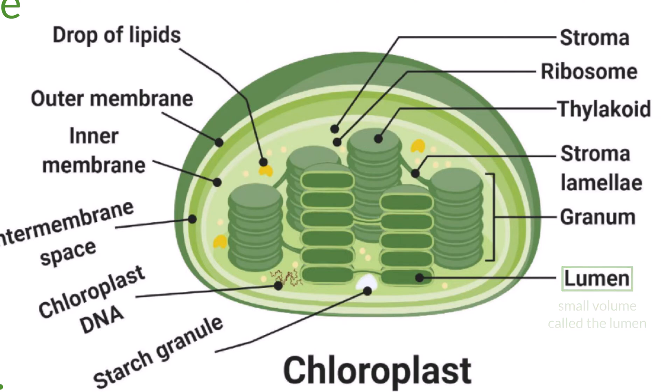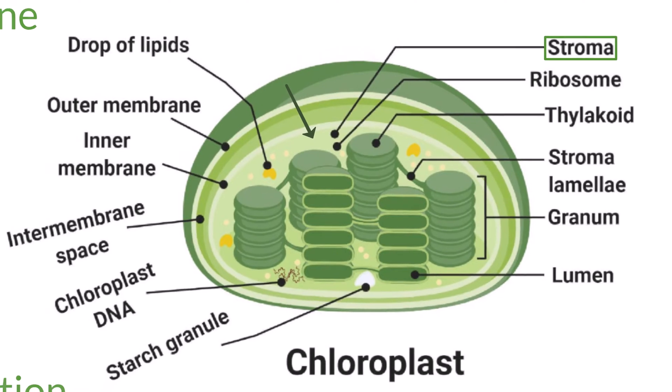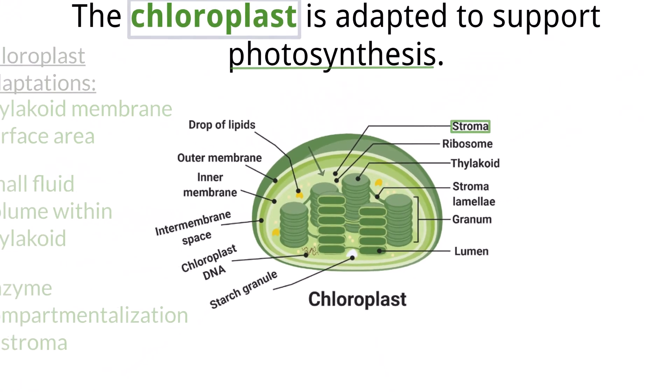Much like the internal matrix of the mitochondria, the stroma, or internal matrix of the chloroplast, houses all of the proper components needed for the Calvin cycle to function. This space, along with the thylakoid membranes spread out around the chloroplast, ensures that the process of photosynthesis works without a hitch.